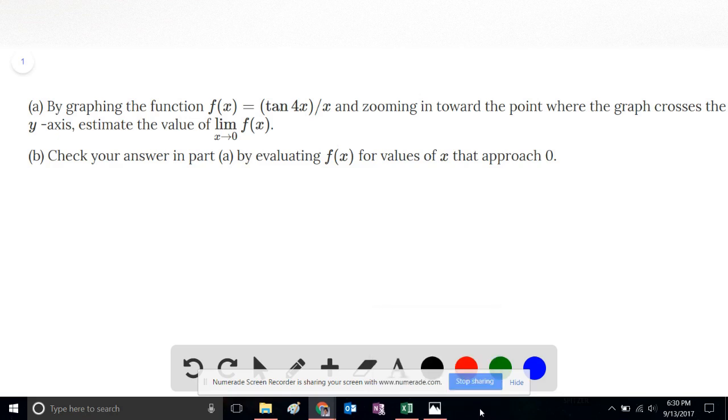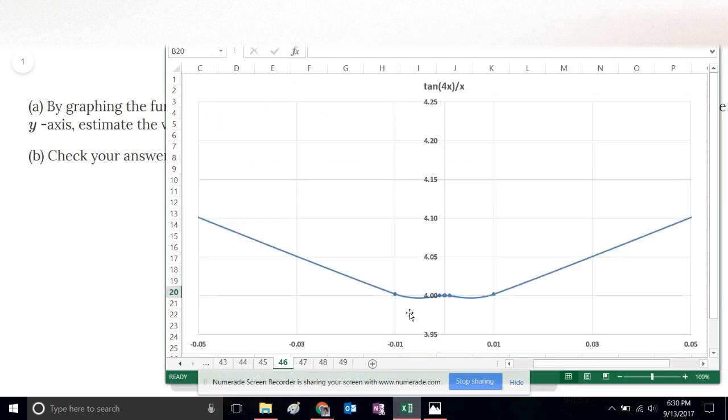If we take a graphing tool and plug in this function tan(4x)/x, and we zoom in very closely to x = 0, we see that the function approaches 4 from the left, and it also approaches 4 from the right. And although this function is undefined at x equals 0, because that would make the denominator equal to 0,